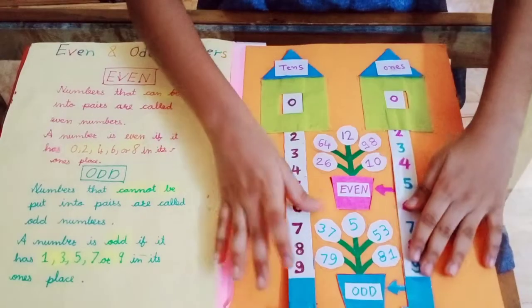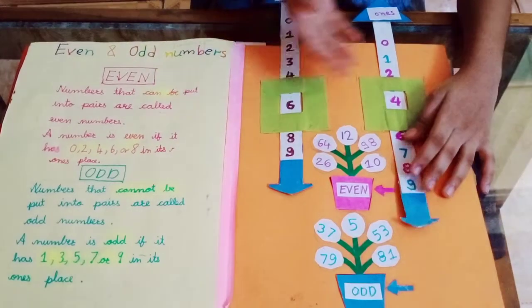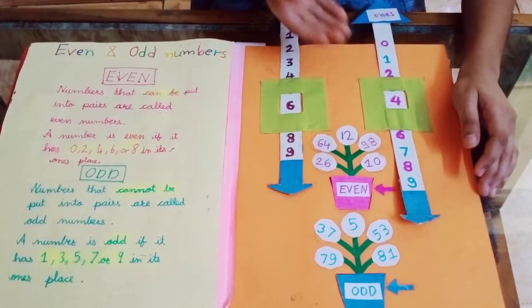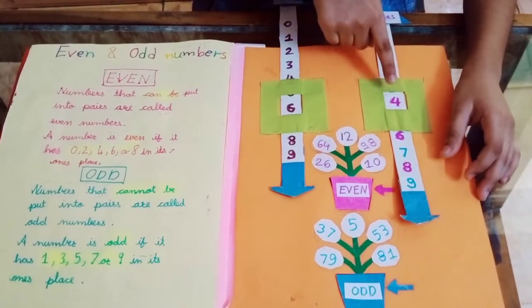64. See, 64 is an even number because 4 is in the ones place and 4 is an even number.